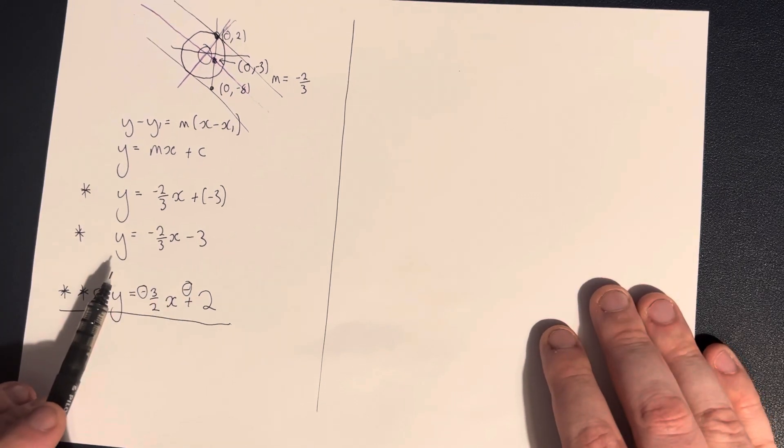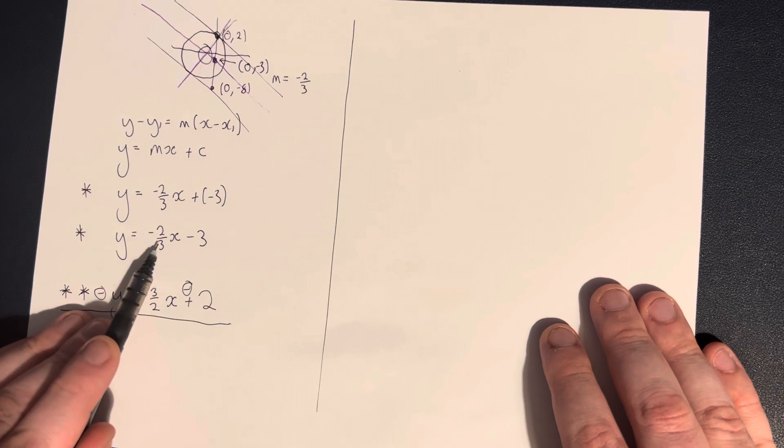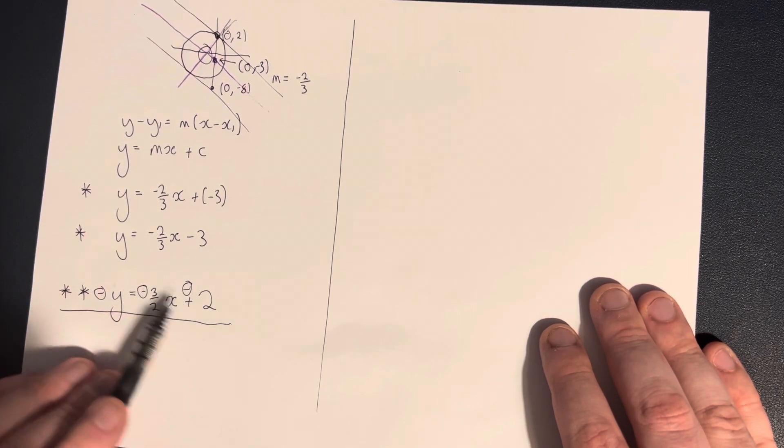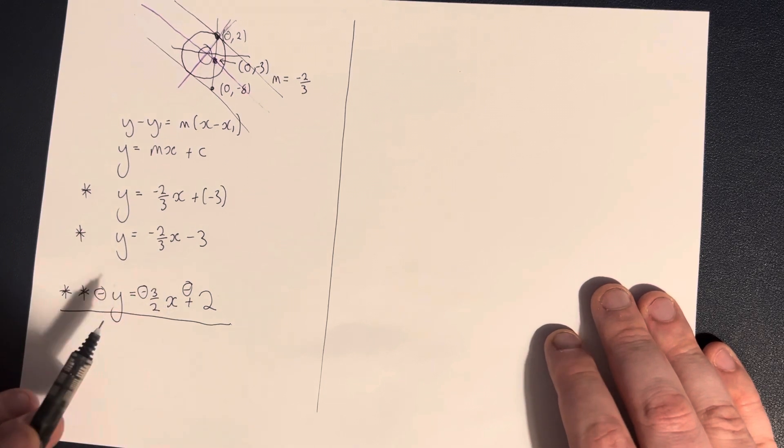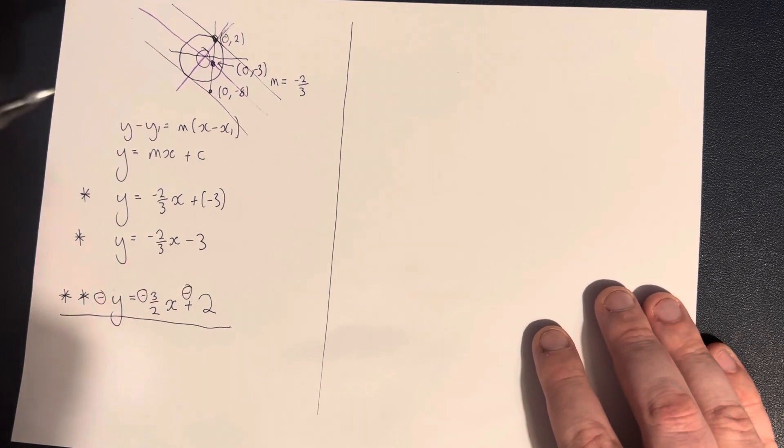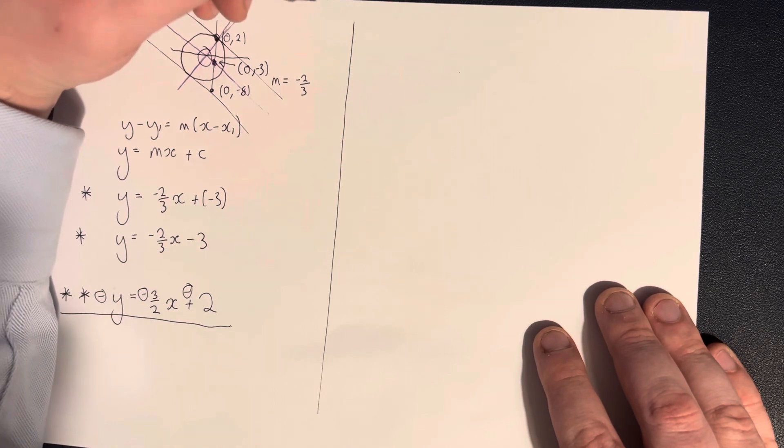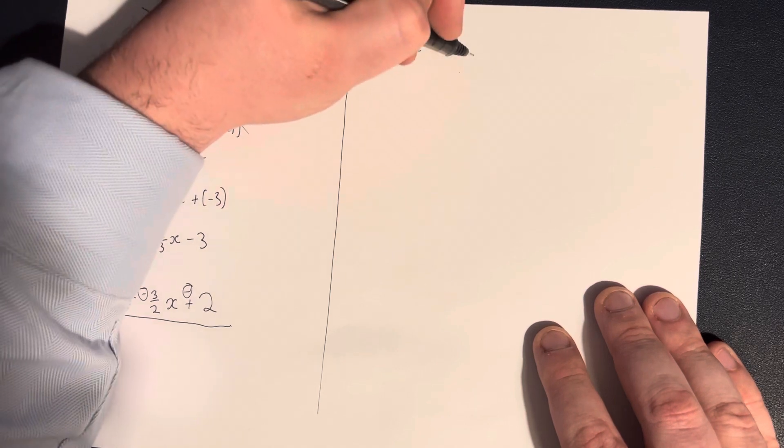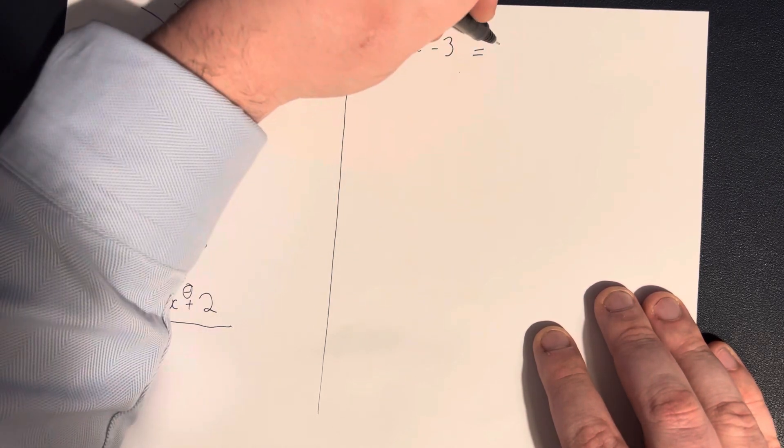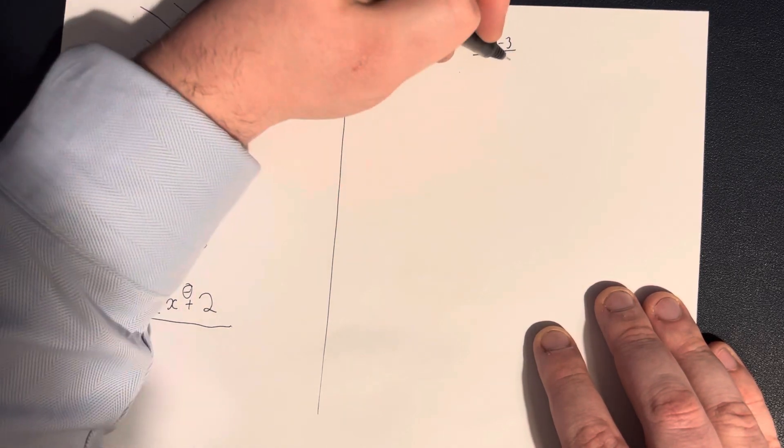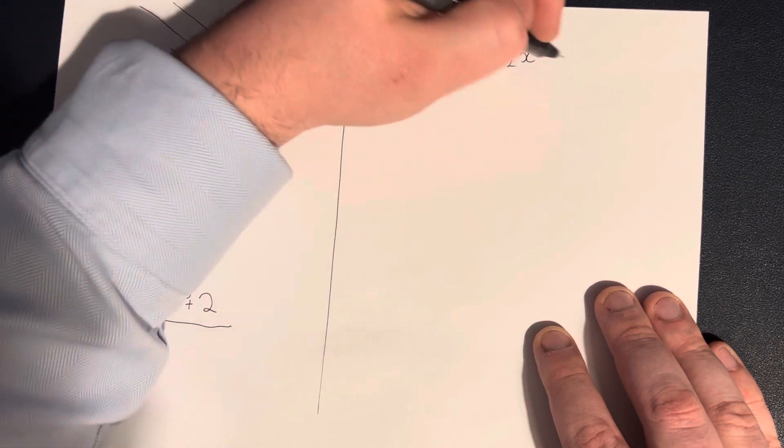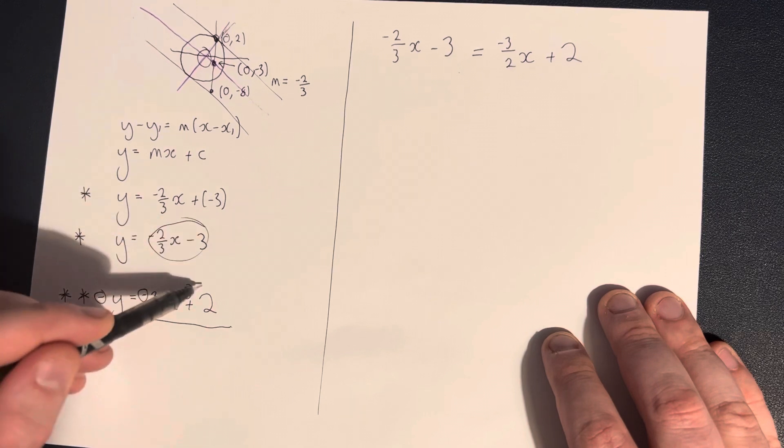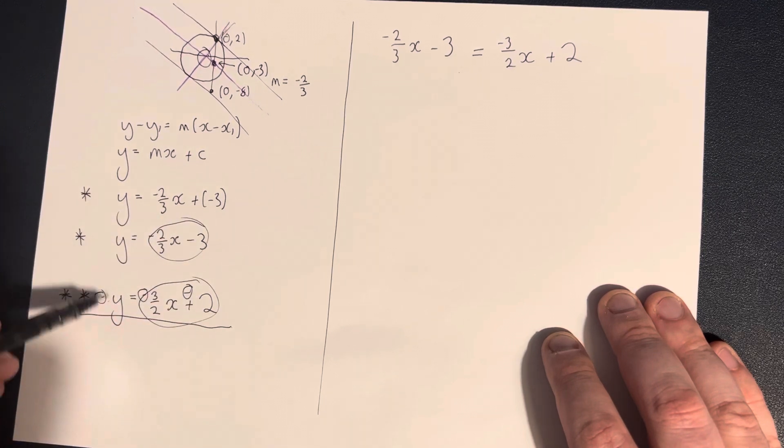If y equals this thing and y equals this thing, a really nice approach is to say that using our Batman and Bruce Wayne identity. If Batman is the only person in the room and Bruce Wayne is the only person in the room, then Batman must be the same person as Bruce Wayne. So we can say that minus 2 over 3x minus 3 must equal to 3 over 2x plus 2. This thing here must equal this thing here, because these two things are equal.